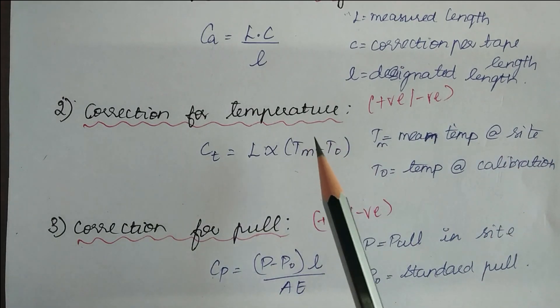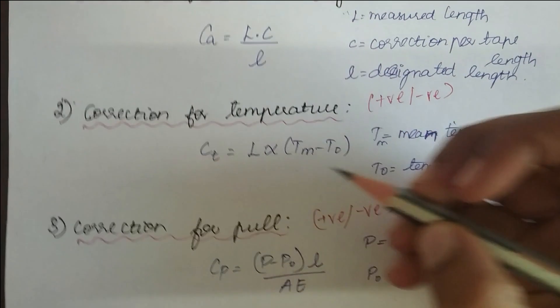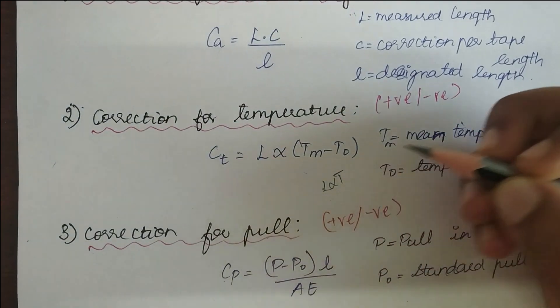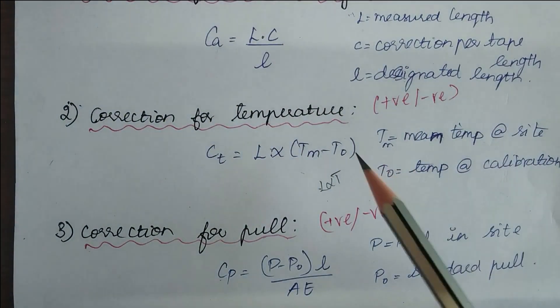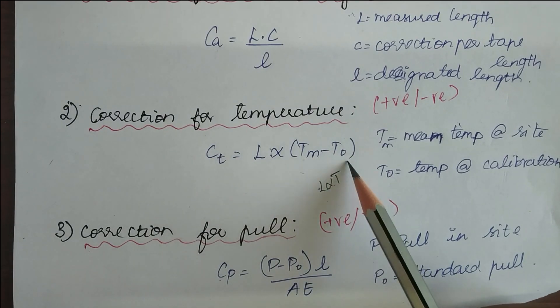This can be easily remembered by the formula in solid mechanics where the change in length due to temperature is L alpha T. So here the T is substituted by Tm minus T0. That's it.